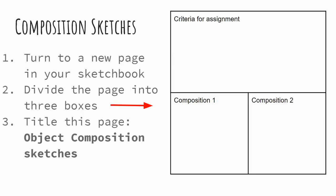So before we get going, you want to turn to a new sheet of paper in your sketchbook if you have it out, and divide it into three sections like so. In the top section, I'd like you to write the criteria for this assignment — I'm going to go over it at the end of this project, and I'm also going to write it into the chat on the side of our Google Hangout.